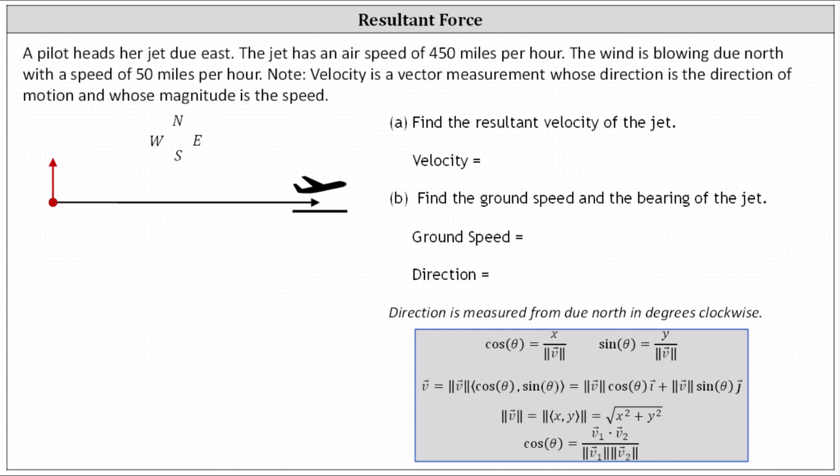A pilot heads her jet due east. The jet has an airspeed of 450 miles per hour. The wind is blowing due north with a speed of 50 miles per hour. We're asked to find the resultant velocity of the jet, the ground speed, and the direction. Recall that velocity is a vector measurement whose direction is the direction of motion and whose magnitude is the speed.